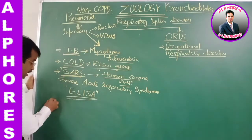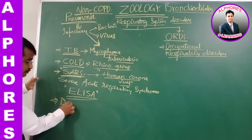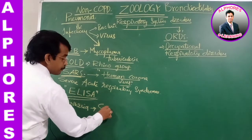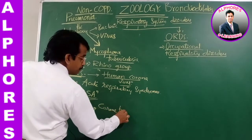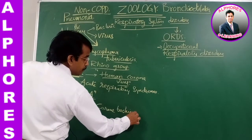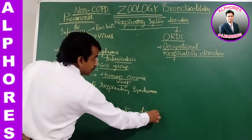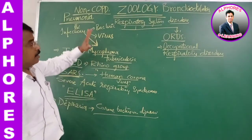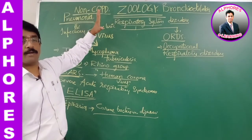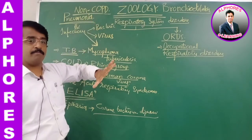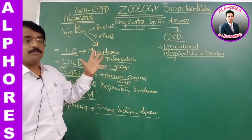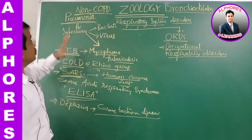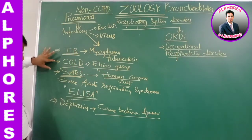Another respiratory disorder is diphtheria, caused by Corynebacterium diphtheriae — a bacterium that also causes respiratory problems. To summarize, the respiratory disorders we have seen include COPD and non-COPD conditions: asthma, emphysema, bronchitis, TB (tuberculosis), SARS, pneumonia, cold, and diphtheria.